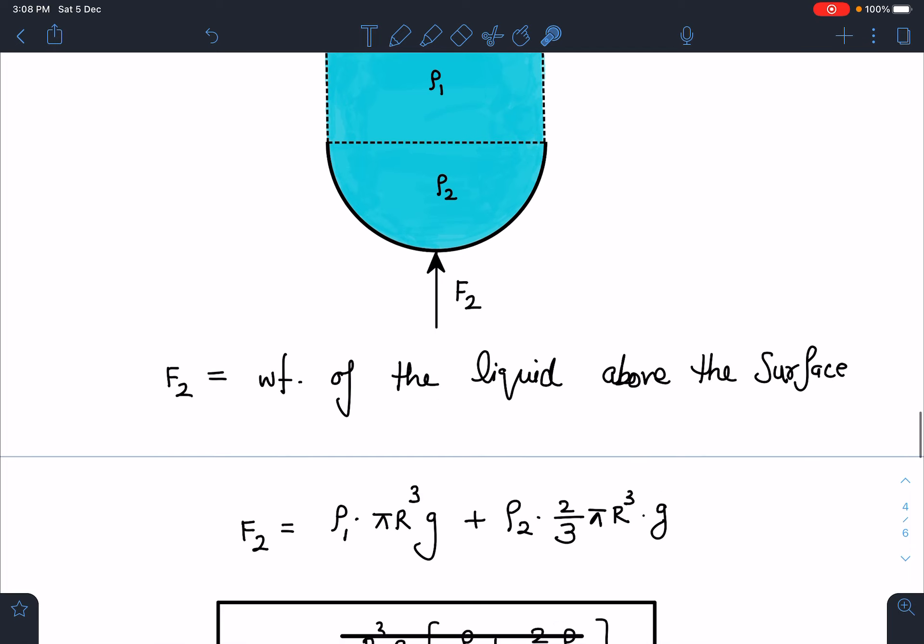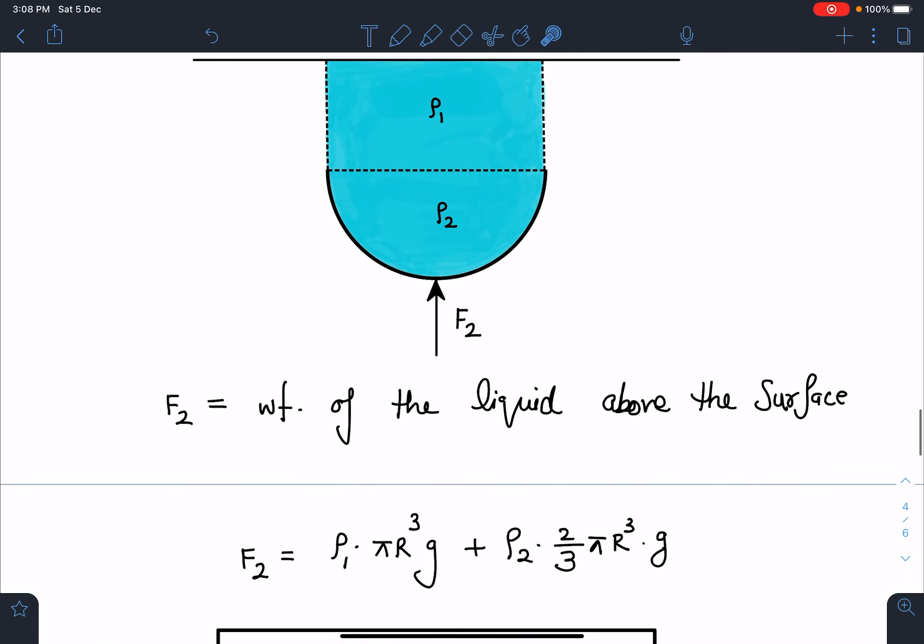Without integration again very easily I can calculate rho 1 into volume of cylinder which is pi r cube into G plus rho 2 into volume of hemisphere which is 2 by 3 pi r cube into G.